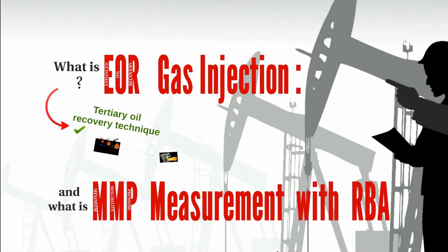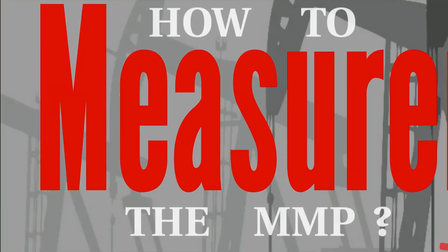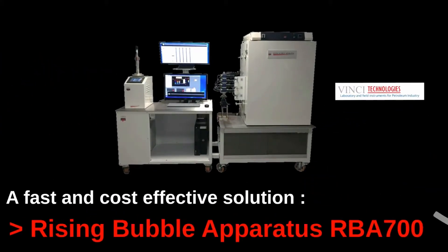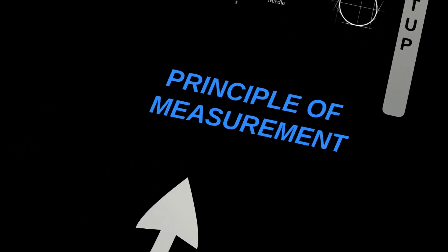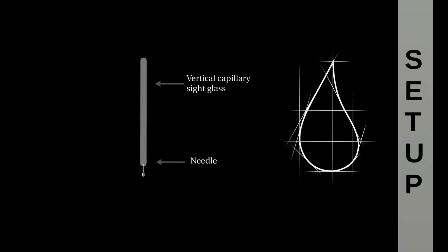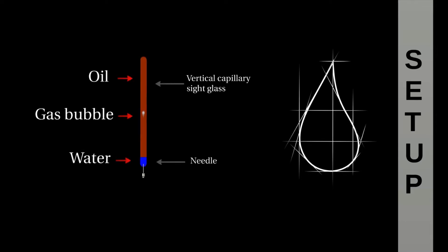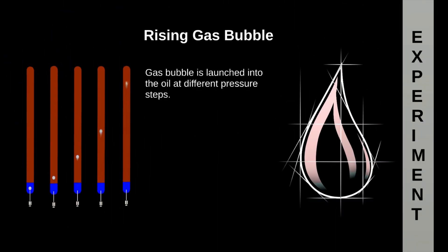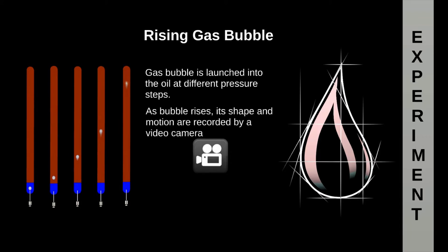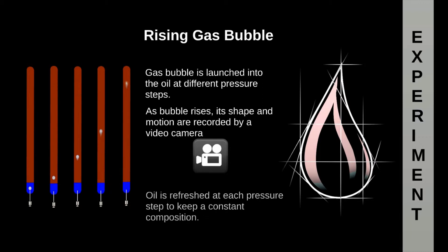We understand now what EOR with gas injection is and the importance of MMP. But how do we measure the MMP? VIND Technologies designed a reliable and accurate solution called the Rising Bubble Apparatus. Let's see the principle of the measurement. First of all, the setup consists of a vertical capillary sight glass with a needle. It is filled with oil and a gap of water at the bottom, and a gas bubble is released inside.